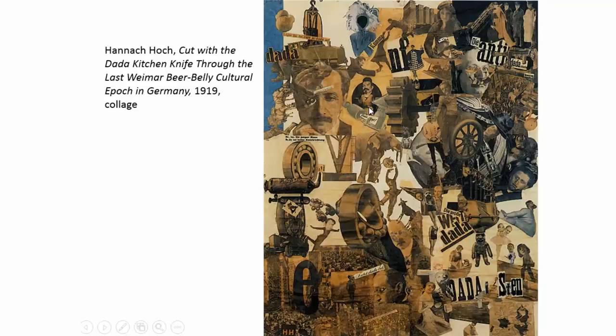Hannah Höch was one of the main figures in Dada — she was part of Berlin Dada. This is Cut with the Dada Kitchen Knife through the Last Weimar Beer-Belly Cultural Epoch in Germany — a collage that criticises the Weimar Republic. Hannah Höch is seen as the originator of photomontage, which is when you cut up photographs and piece together an artwork from them. She also uses collage technique: different letters, phrases and pictures cut from contemporary magazines and pasted onto a two-dimensional surface.